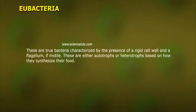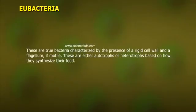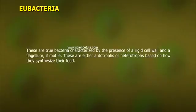Eubacteria are true bacteria characterized by the presence of a rigid cell wall and a flagellum if motile. These are either autotrophs or heterotrophs based on how they synthesize their food.